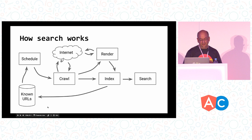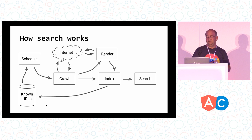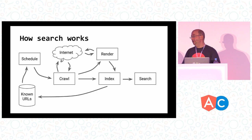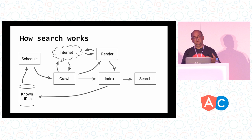It all essentially starts with a bunch of URLs. We go off to the Internet to look at those URLs, try to render the pages to see what they actually look like — kind of like a browser — and the content we pick up there, we take for indexing. Understanding these steps gives you a sense of what you might need to watch out for when it comes to search.